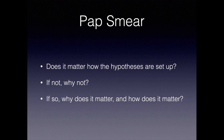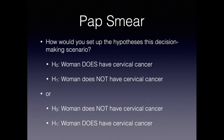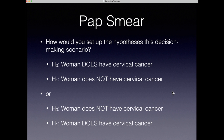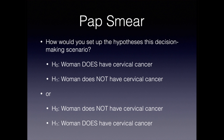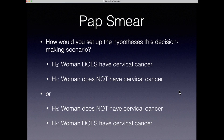The question is: does it matter how we set these up? If not, why not? And if so, why and how does it matter? To answer that, we need to think about what a type one error is, what a type two error is, and the relative costs associated with each of those types of inferential errors.